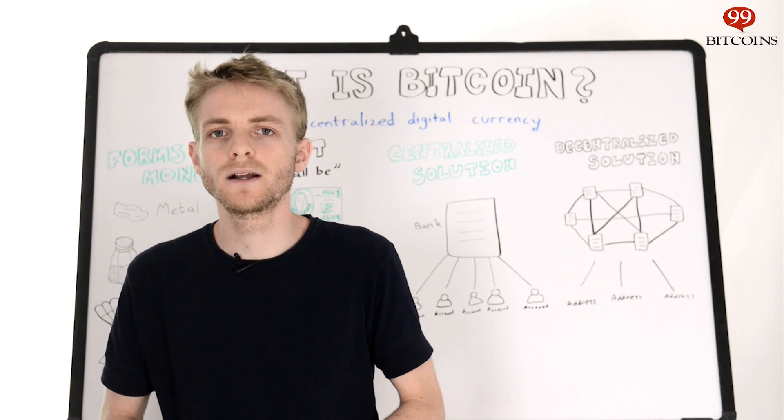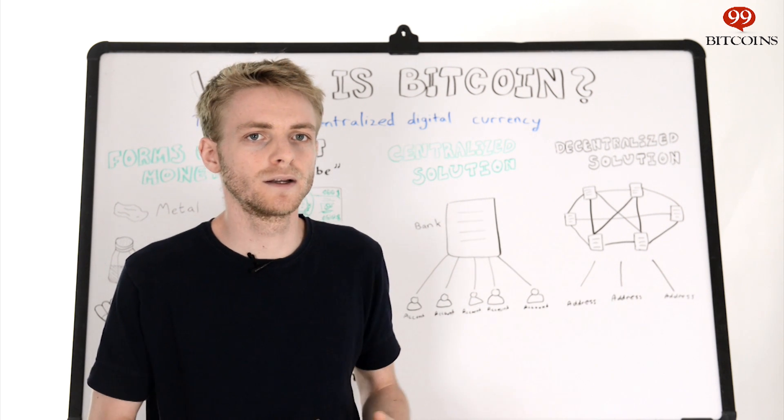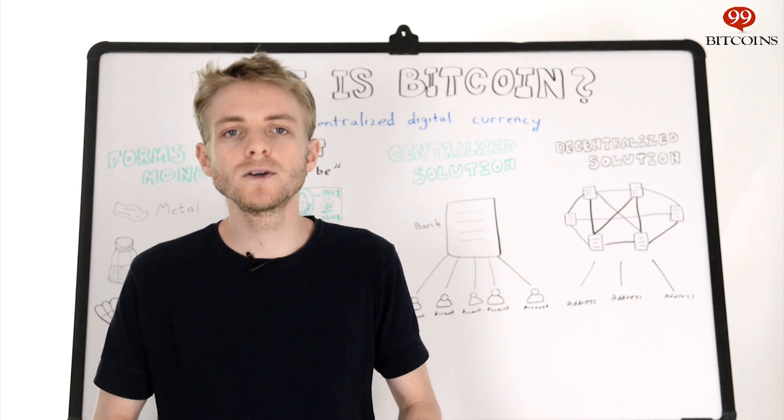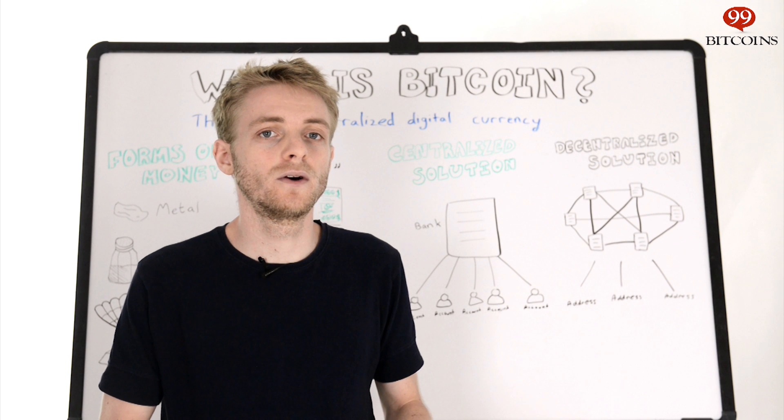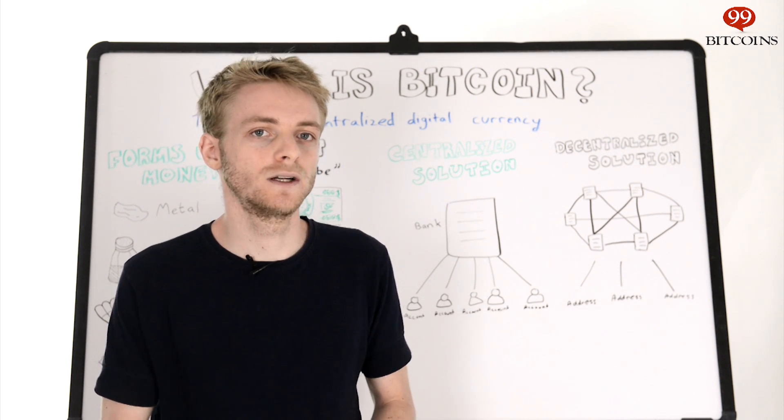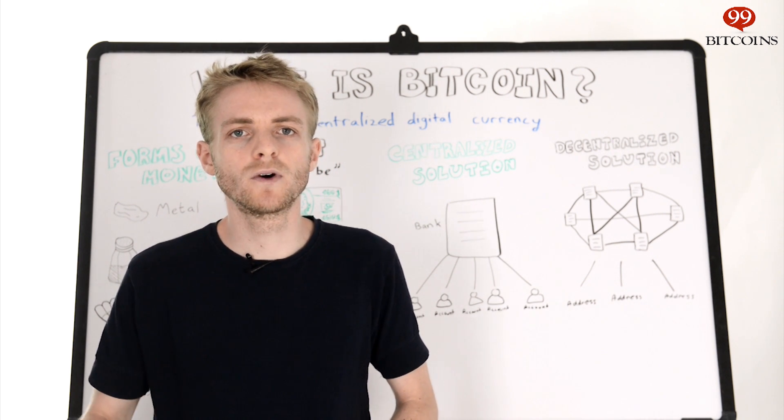Now usually people get concerned when they hear about this ledger being public. Isn't this a privacy problem? Well like most privacy issues it's complicated. Whatever you may have heard about Bitcoin, it's not really inherently anonymous or identifiable. We'll touch more on this in a later video.